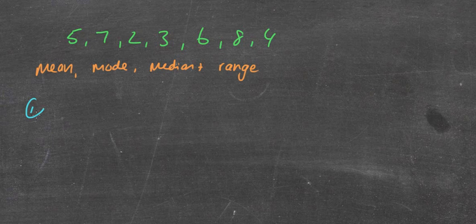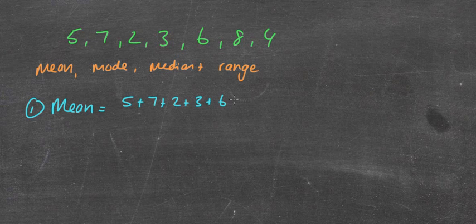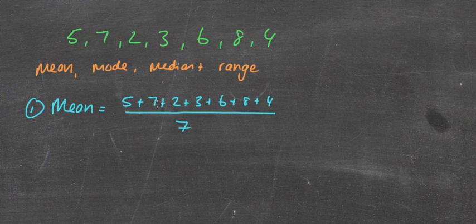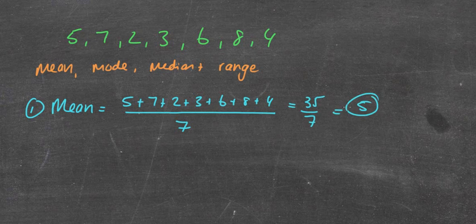Welcome back. So let's have a look at the mean. Hopefully you went 5 plus 7 plus 2 plus 3 plus 6 plus 8 plus 4, and divided the whole thing by 7. So that's 35 divided by 7, which equals 5.